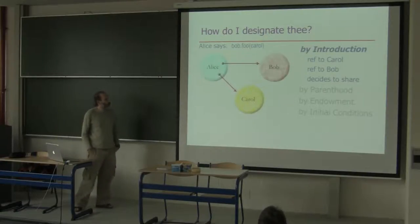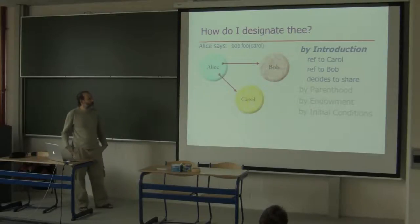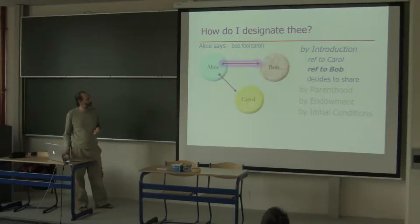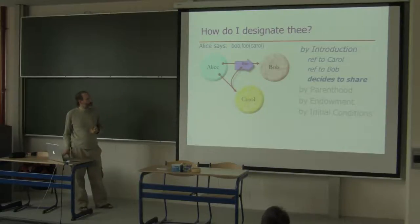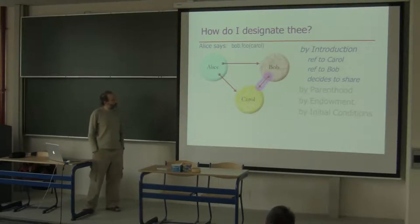The first and most important is introduction. If Bob and Carol both already exist and Bob does not already have a pointer to Carol, then the only way Bob can come to hold a pointer to Carol is if there exists a third object such as Alice, that already has a pointer to Carol and to Bob, and decides — for example, by sending a foo message to Carol as an argument — to share with Bob her access to Carol, transferring a copy of the pointer.